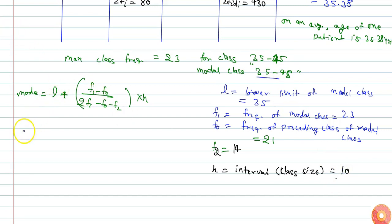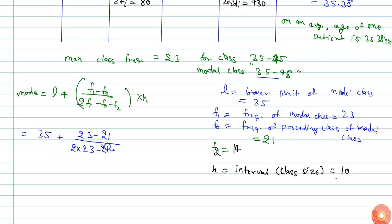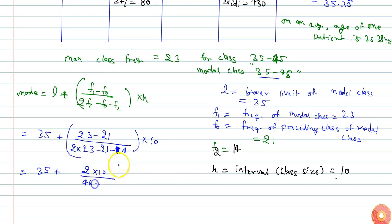Substituting all values: Mode = 35 plus (23 minus 21) divided by (2 times 23 minus 21 minus 14), multiplied by 10. This gives 35 plus 2 times 10 divided by (46 minus 35), which equals 35 plus 20 divided by 11. Solving this gives Mode equals 36.8 years.